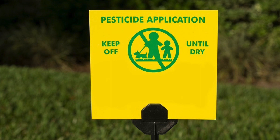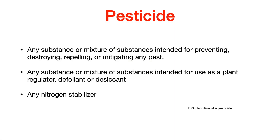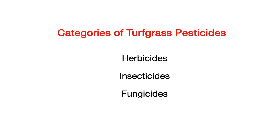Generally, the original products have been banned and replaced over time with newer, more effective, and lower risk type of products. A good place to start this presentation is with the definition of a pesticide. Shown here is the EPA definition. In turf, the major types of pesticides used on golf courses are herbicides for weeds, insecticides for insect pests, and fungicides for controlling fungal pathogens.